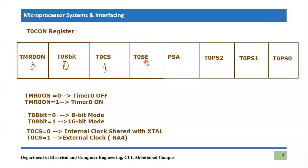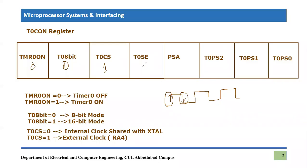Now we come to the fourth bit, which is Timer Zero Source Edge — SE. The clock provided to the timer, whether internal or external, has a positive cycle and a negative cycle. Some ICs and logic gates work only on edges, not levels. There can be positive edge triggered devices or negative edge triggered devices. Similarly, Timer Zero can work on either positive edge or negative edge. If Timer Zero Source Edge bit is zero, that means we are referring to the positive edge and will increment the timer on positive edge. If it is one, then we will increment the timer on the negative edge.